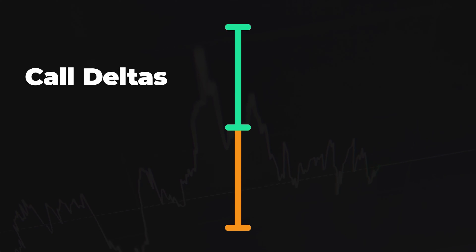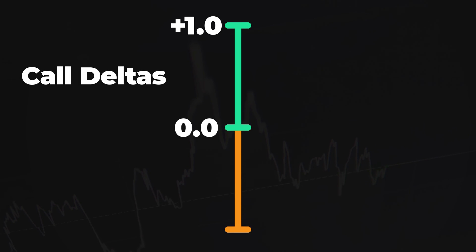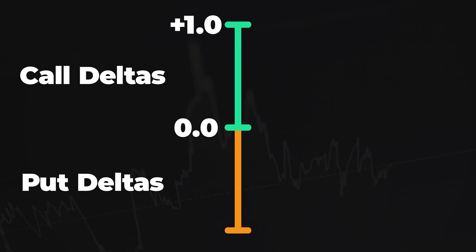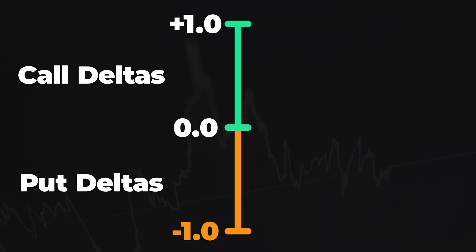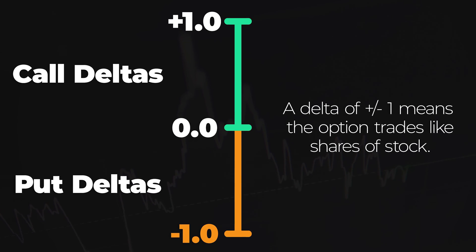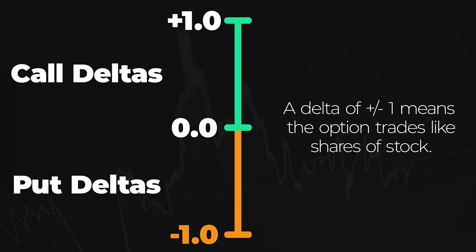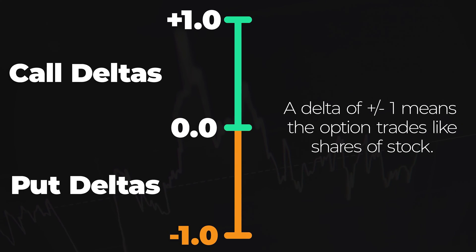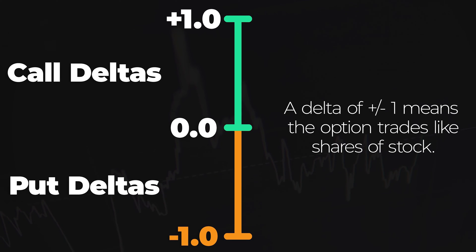Call option Deltas can range from 0 to positive 1, and put option Deltas can range from 0 to negative 1. So an option's price can only be as sensitive as a share of stock itself. But option Deltas do not remain constant — they do change, and this brings us to our second option Greek to understand, which is called Gamma.